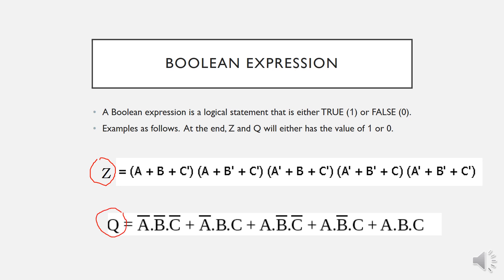Both are Boolean expressions but use different representation. The first Z uses a sum term as in this Boolean expression, and the second one uses a product terms format. Since each of the variable within the expression only takes the value of zero or one, the expressions Z and Q can only have the possibility of zero or one.